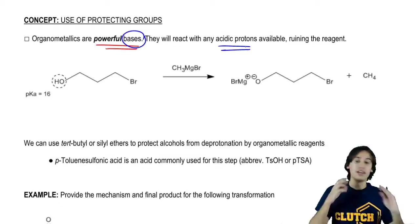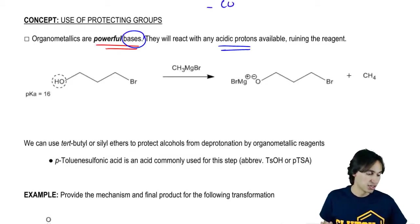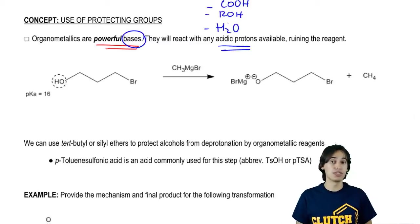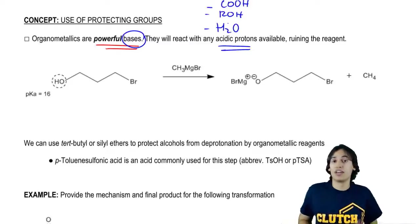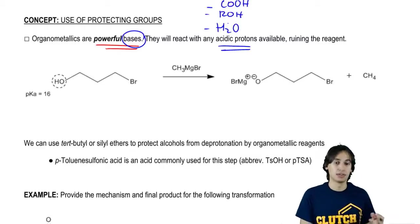We've talked about how those acidic protons are usually from carboxylic acids, very acidic, alcohols, pretty acidic, and water. These are all examples of protons that are so acidic that they're going to mess with the reagent instead of letting it react with an electrophile.